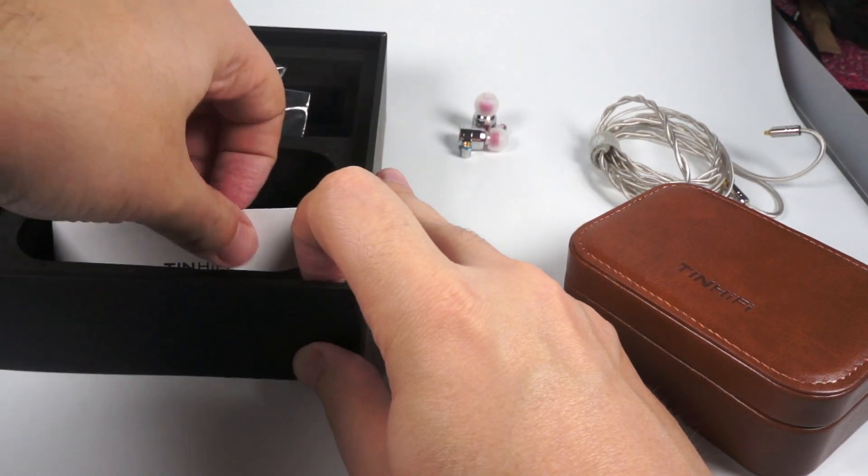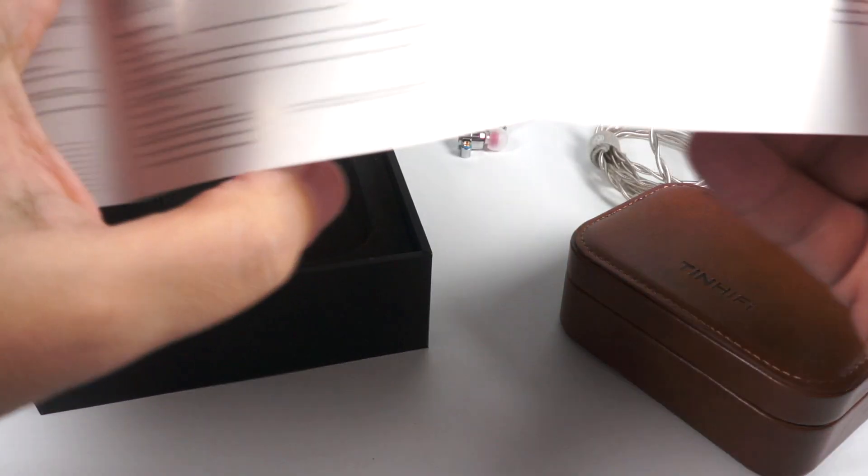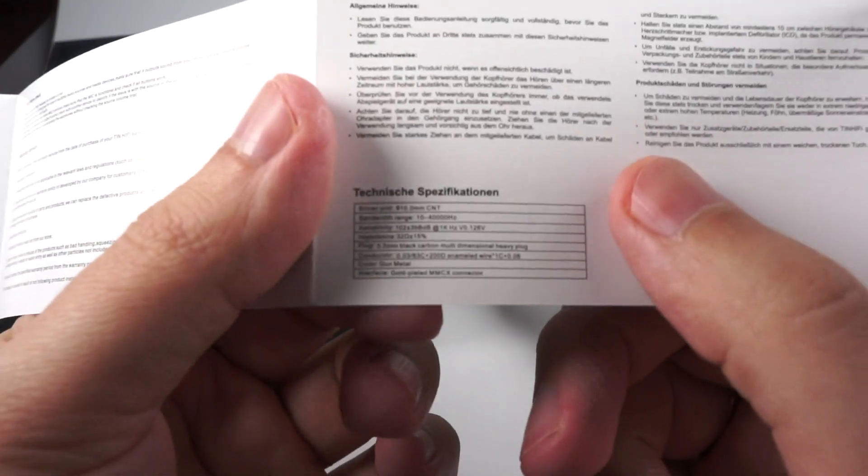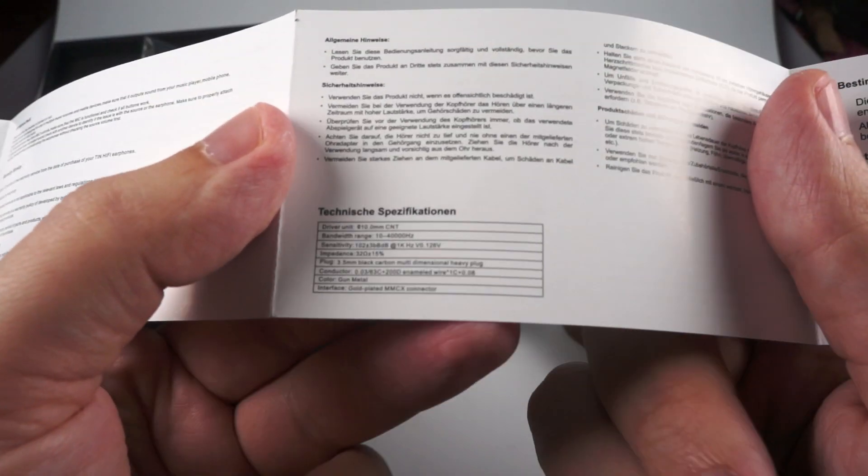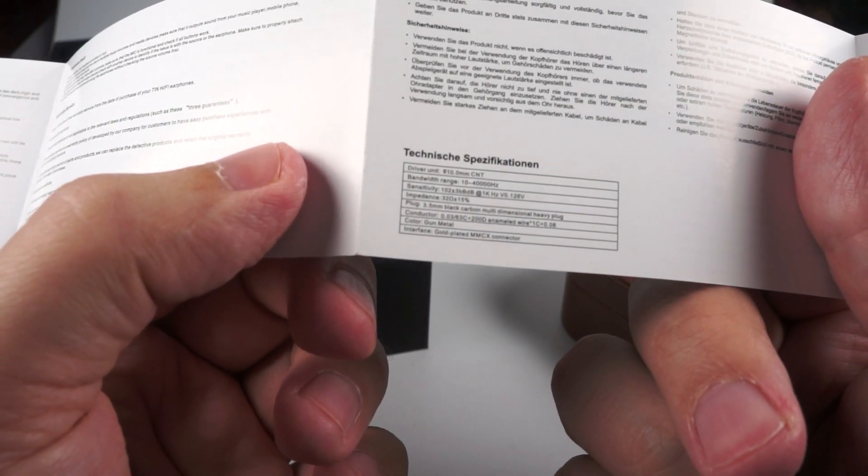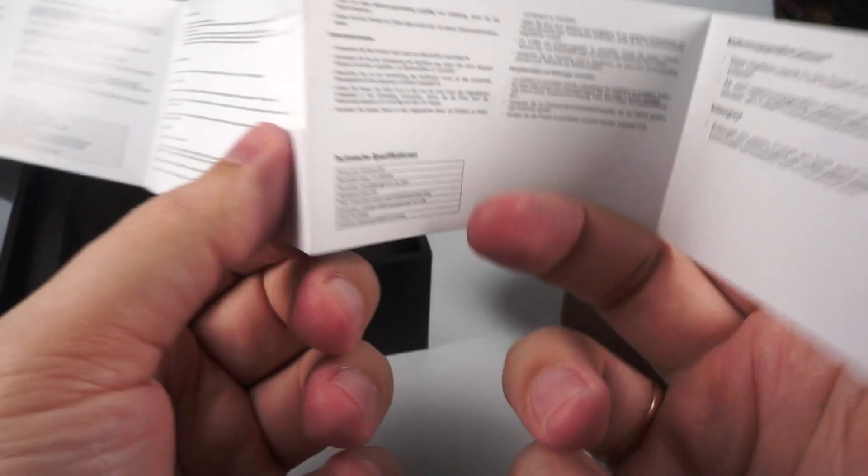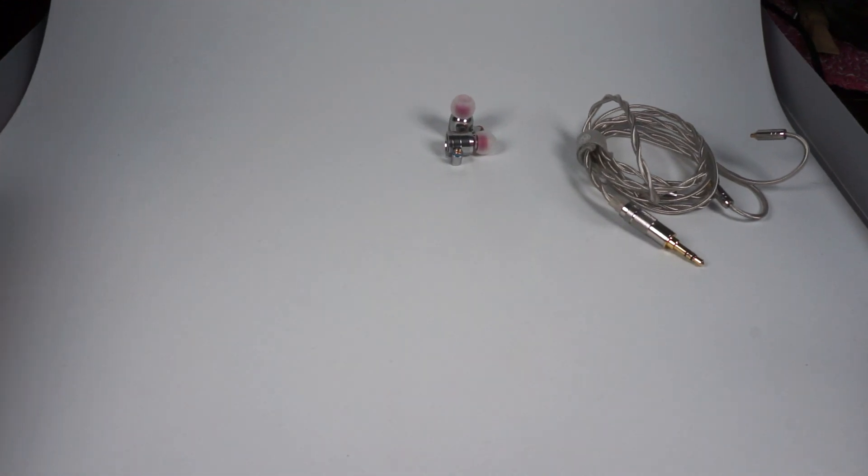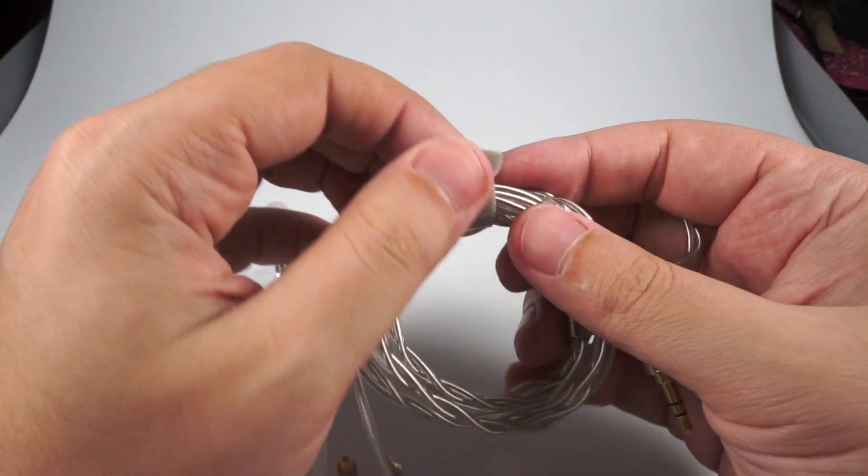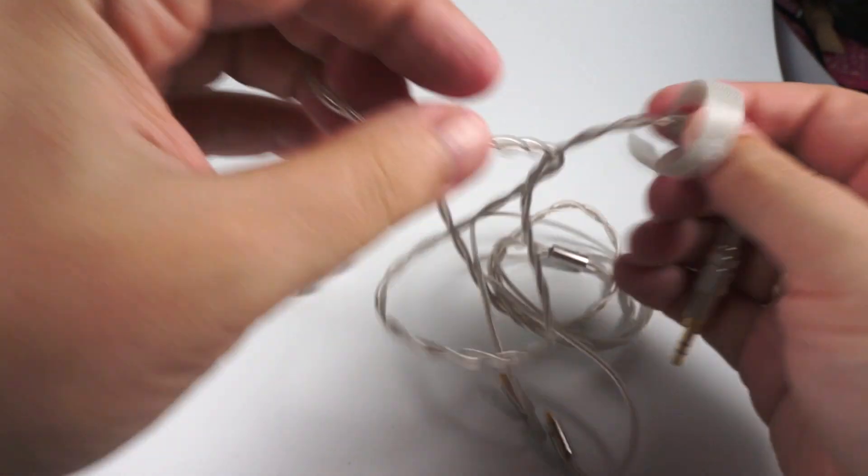I miss T2 packaging because I liked their book-like case, it looked really attractive. Specifications: 10 millimeter carbon nanotube dynamic driver, sensitivity 102 decibels, and impedance 32 ohms. As you can see, really good balance of sensitivity and impedance so it will be a good load both for smartphones and for players, but it will require a player to unveil the full potential.